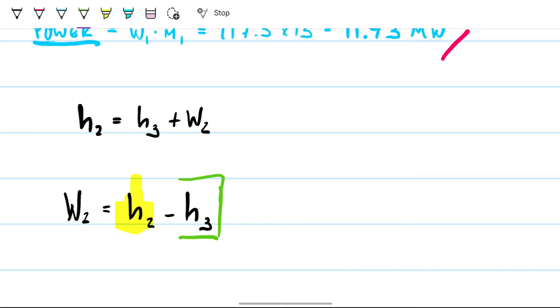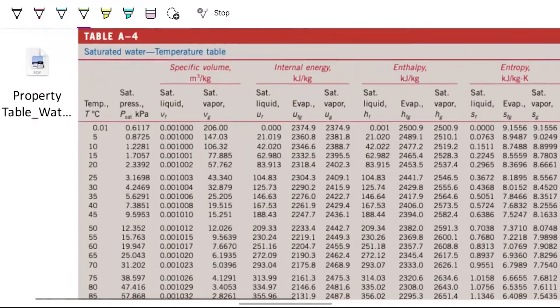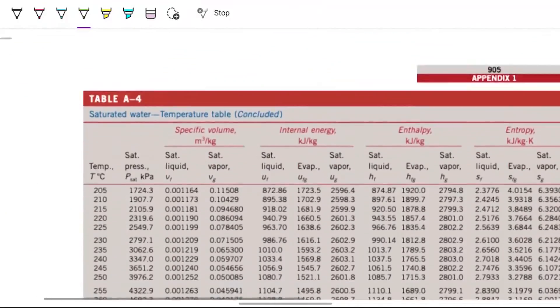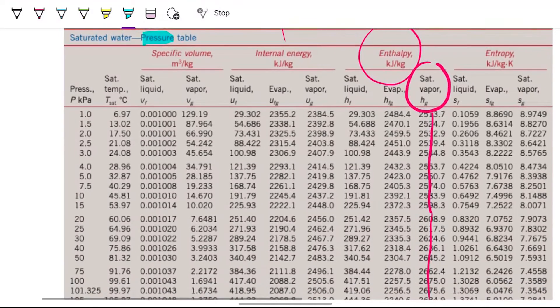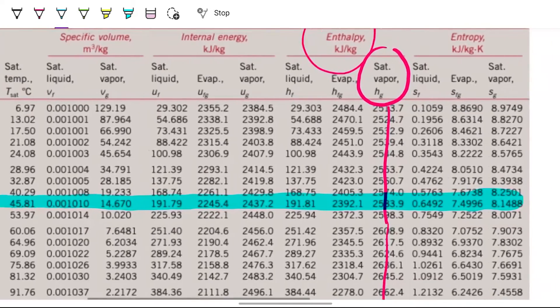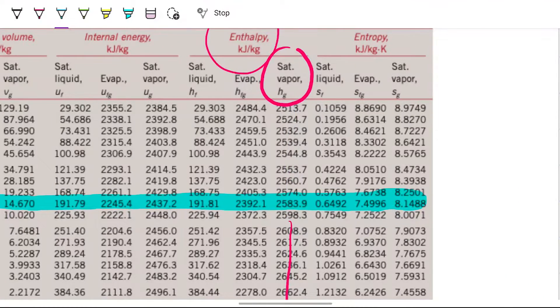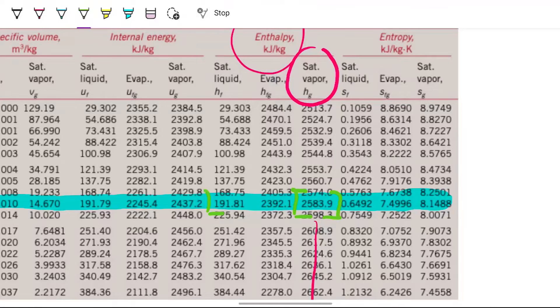We need to grab things at 10 kilopascals. So let's go to the table, pressure table. This is temperature table, I'm good with pressure table. 10 kilopascals, this is the row I'm interested in. Right here. I know it's 85% quality, so therefore it's going to be 85% of this number plus 15% of this number.